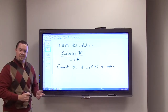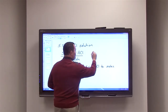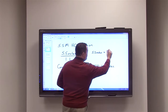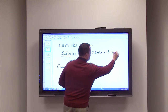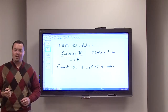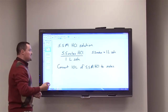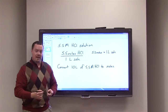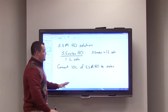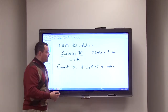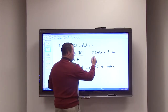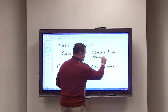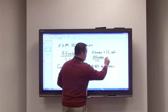We can write this as an equality: 5.5 moles of HCl in one liter of solution. From any equality we can derive two conversion factors — we just write the equality in the form of a fraction.